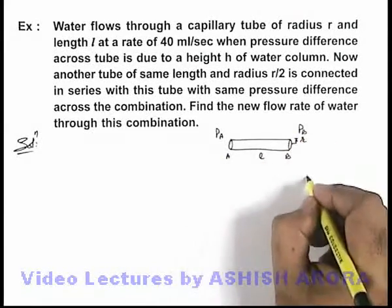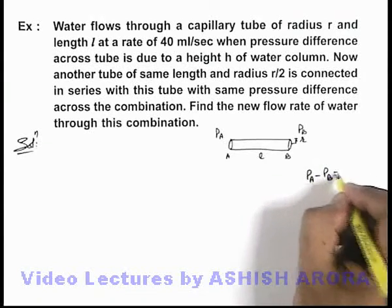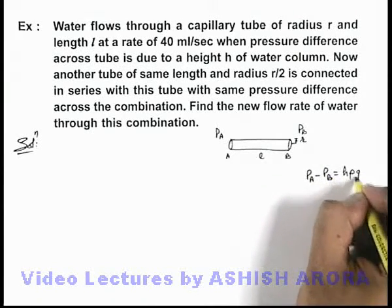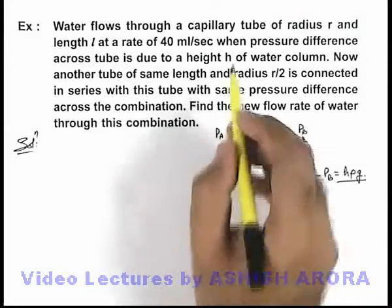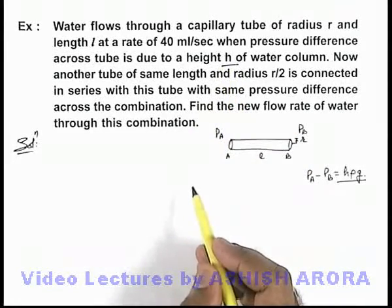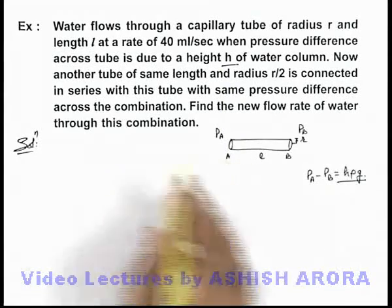We are given that Pa minus Pb equals h ρ g, where ρ is the density of water, as the pressure difference is due to height h of the water column. So in this situation we can